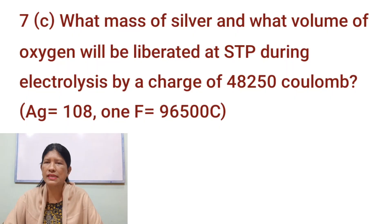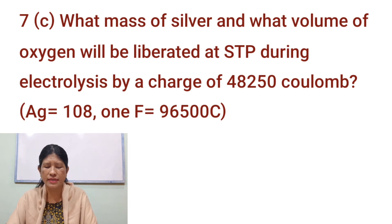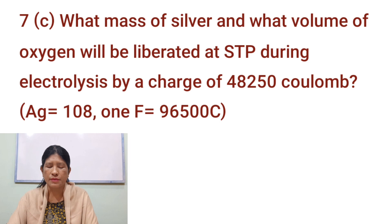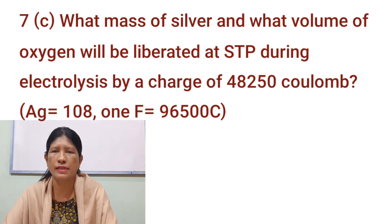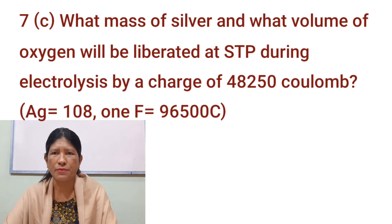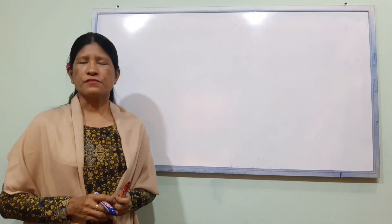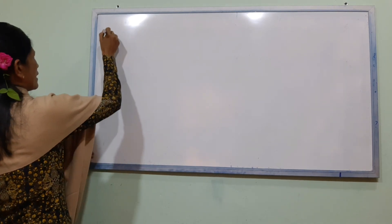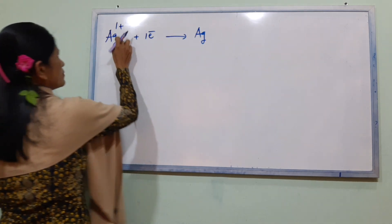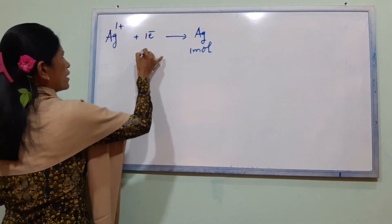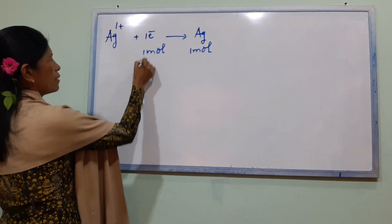Number 7C: What mass of silver and what volume of oxygen will be liberated at STP during electrolysis by a charge of 48,250 coulombs? We look at the mass of silver using the silver equation, and the volume of oxygen using the oxygen equation.